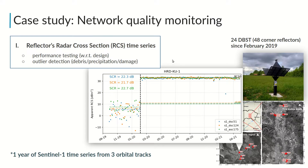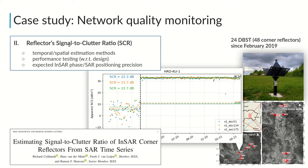Afterwards, from the amplitude time series, one could estimate the radar cross-section to track a corner reflector's performance in time and detect outliers, for example due to damage or accumulation of debris or precipitation. Consequently, one can estimate the signal-to-clutter ratio to predict the positioning precision and InSAR phase variance.